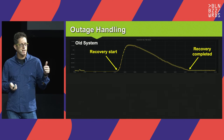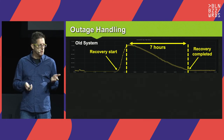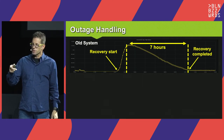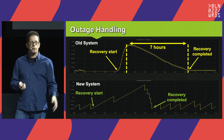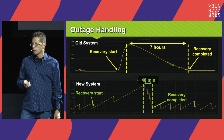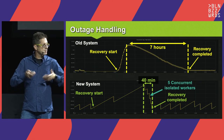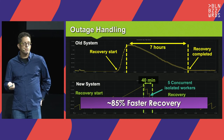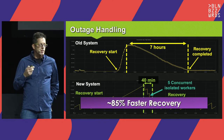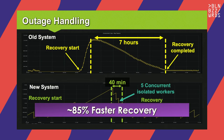Let's look at outage handling. Here's an outage with the old system — the recovery took about seven hours. Here's a similar outage with the new system: something broke in the delivery of data, it was repaired, and we had to process a lot of data — it took 40 minutes because the system automatically started five concurrent clusters and processed everything really fast. That equates to about 85% faster recovery. Whereas before recovery was a big issue, now it's a no-brainer. Sometimes there's an outage at night, we wake up in the morning and see there was an outage at 2am — by 3am it was done.